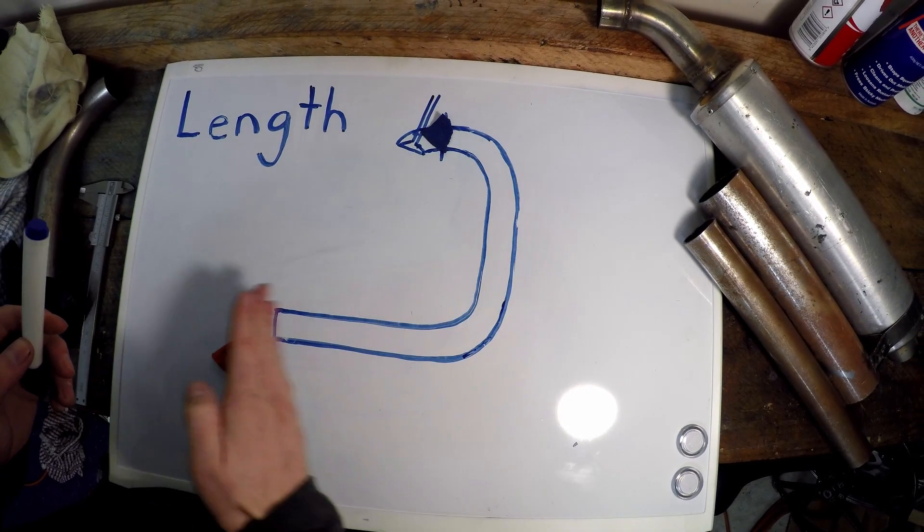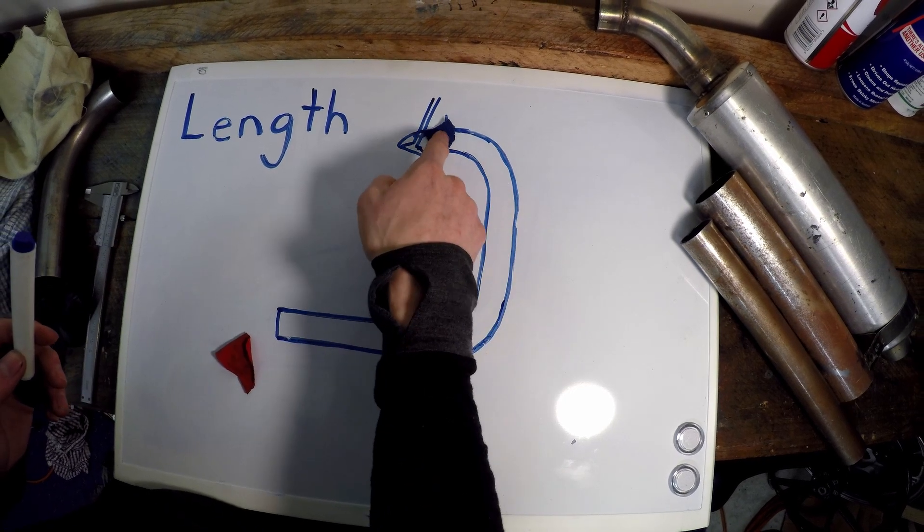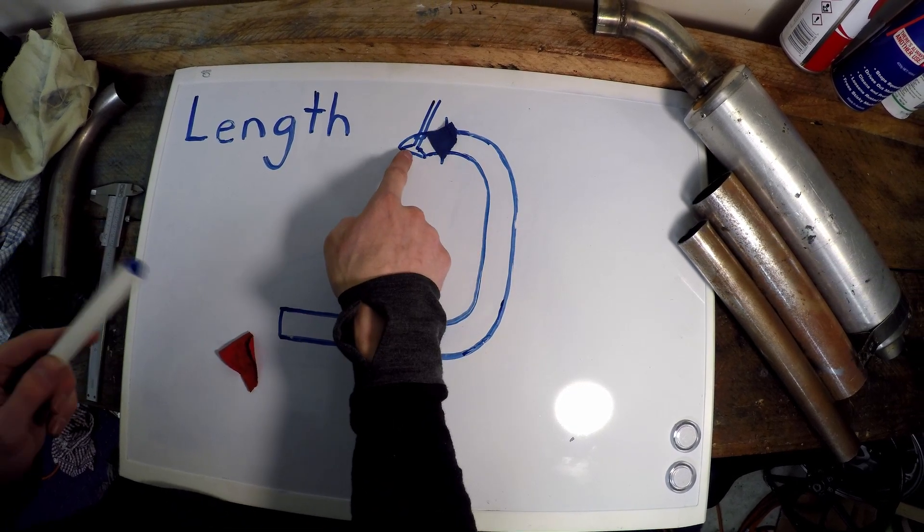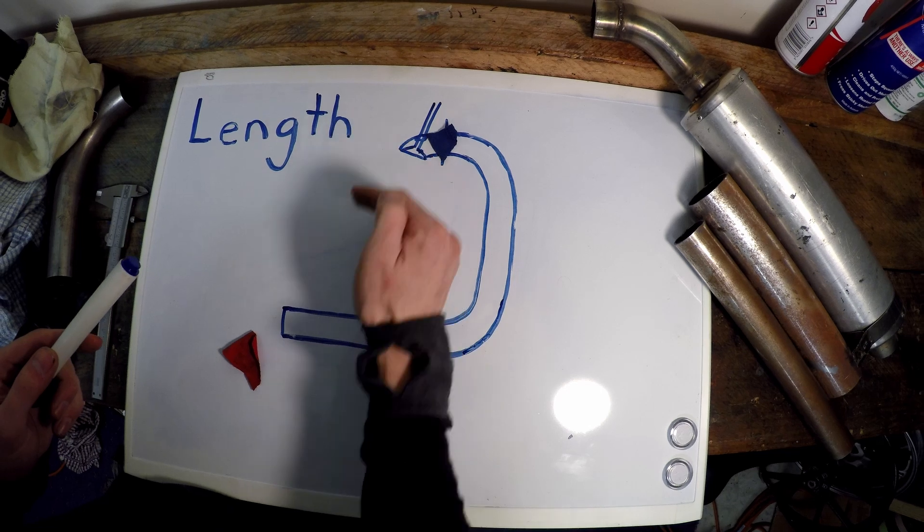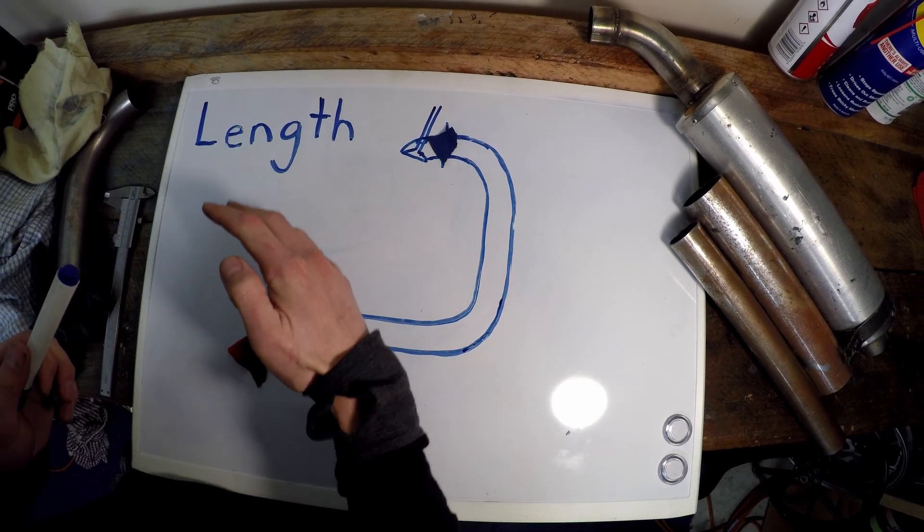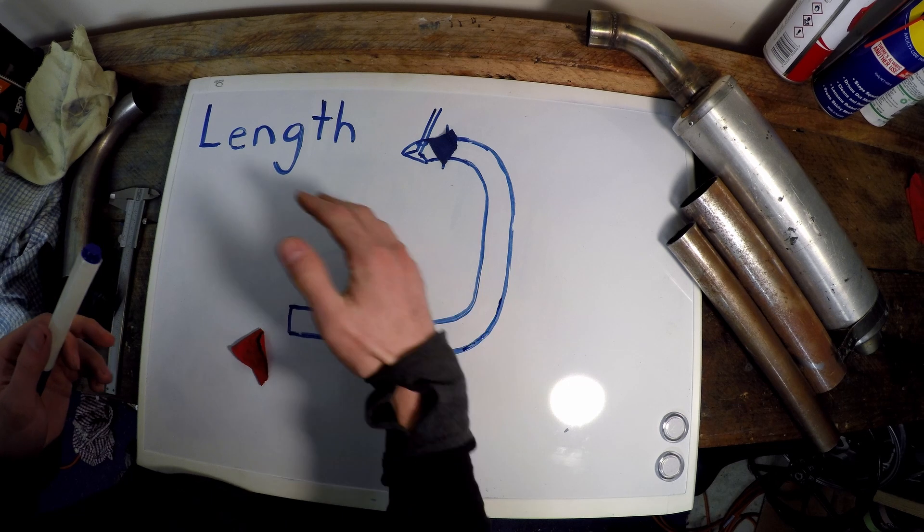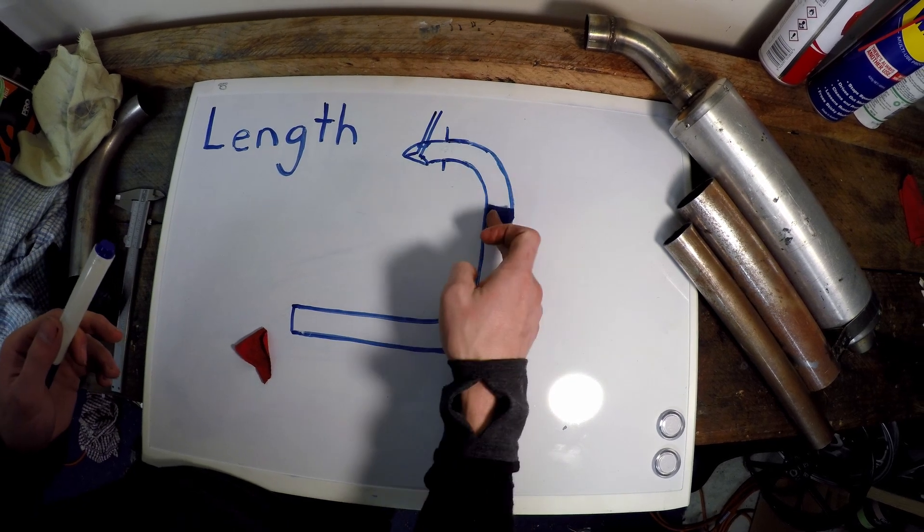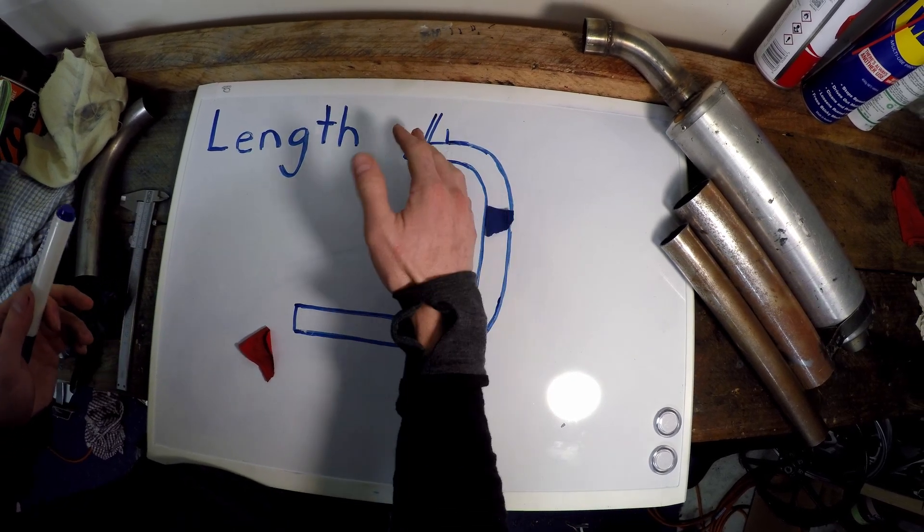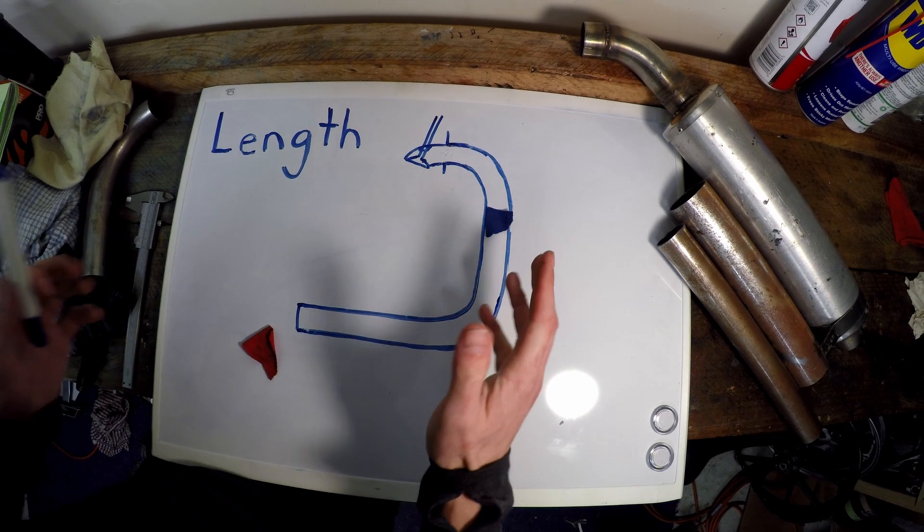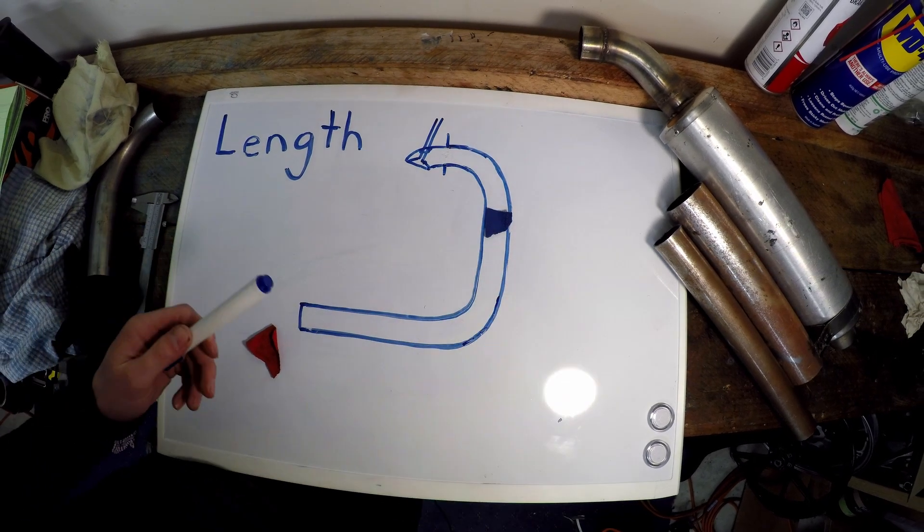If we can get it the right length so this negative pressure wave gets to our exhaust valve as it's opening, it will assist the scavenging. It'll suck some exhaust gases out, get them moving, and it will increase our volumetric efficiency and increase our horsepower.